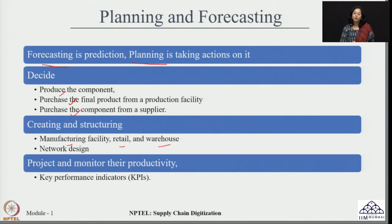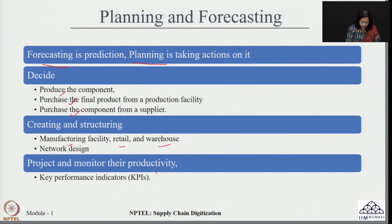It is also important to decide the role of facilities — manufacturing facilities, retail outlets, and warehouses — and how they will play their roles in the supply chain network. This needs to be planned well in advance, helping in structuring the overall supply chain network. In terms of monitoring performance of all these facilities and processes, monitoring productivity is an important step in ensuring that planning and forecasting is done in the most effective manner.